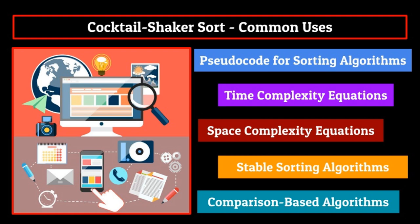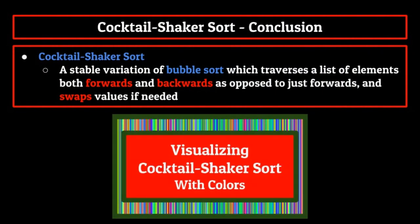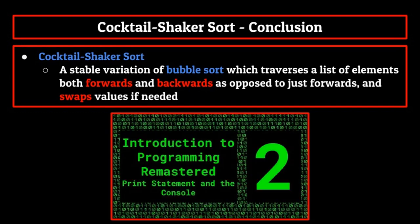Not bad for a useless sorting algorithm. That also concludes our discussion on cocktail shaker sort. As a review, it is a stable variation of bubble sort which traverses a list of elements both forwards and backwards as opposed to just forwards, and swaps values if needed. Again, if you're confused at all about any aspect of cocktail shaker sort, check the description for timestamps which will take you to each section of this video. Be on the lookout for the cocktail shaker sort visualization in the next few days, as well as another video from Sean continuing along his series Remastering the Introduction to Programming Lecture.